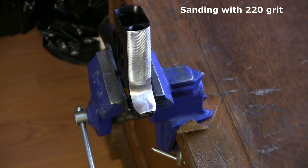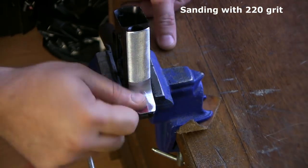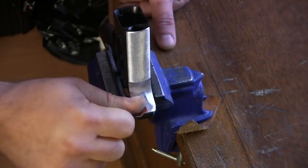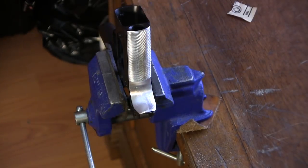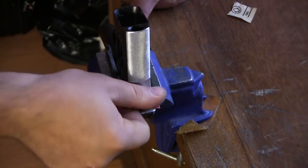You can see that right now I'm just sanding with 220 grit, and a little bit later you'll see me sanding everything down with 320.